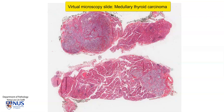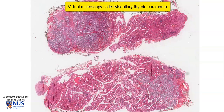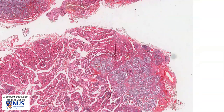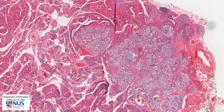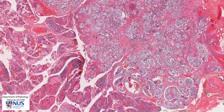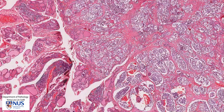The diagnosis is medullary thyroid carcinoma. The tumor itself is a little bit irregular with some areas that appear to be infiltrating into the thyroid parenchyma, as you can see here.